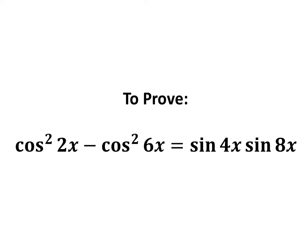In this video, we will learn to prove the equation: square of cosine of 2x minus square of cosine of 6x is equal to sine of 4x times sine of 8x.